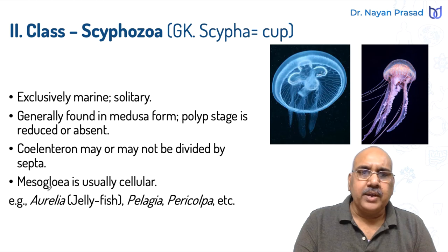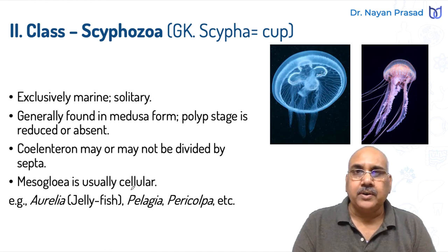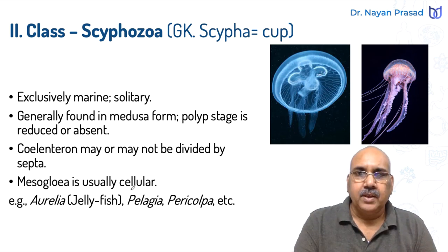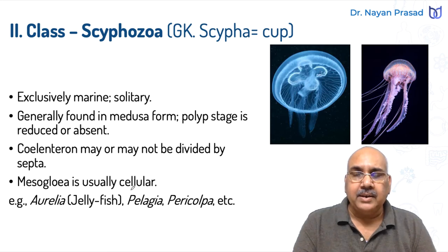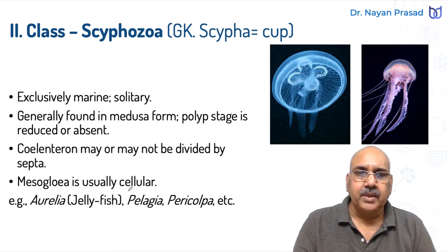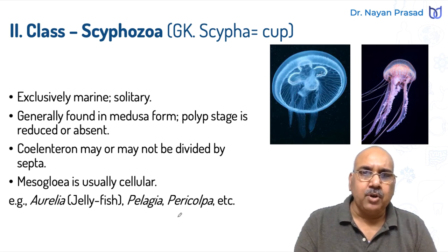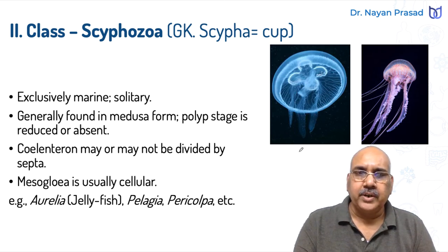Mesoglia is usually cellular and may contain some special cells. The examples of Syphozoa are Aurelia, Pelagia, and Pericolpa.